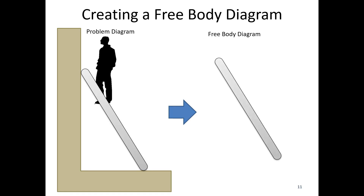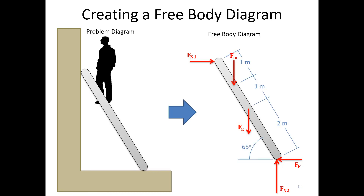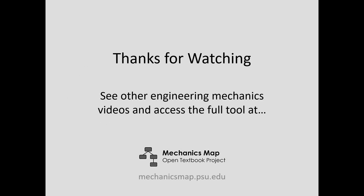Building the ladder example step by step: we draw the ladder, then add the gravity force acting at the center point. The man pushes down on the ladder — that's a normal force. We add a normal force at the top of the ladder perpendicular to the vertical wall, so it's horizontal. The normal force at the bottom is perpendicular to the horizontal floor, so it's vertical. Since the bottom is a rough surface, we add a friction force — the ladder would tend to slide outward, so friction holds it in place. Finally, add angles and dimensions to complete the free body diagram. That's all for today's video lecture — thanks for watching.